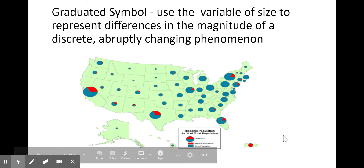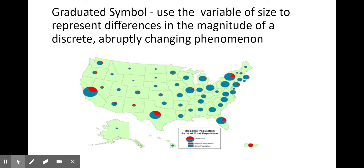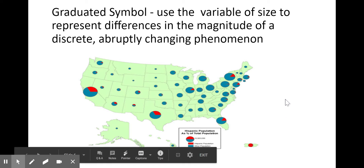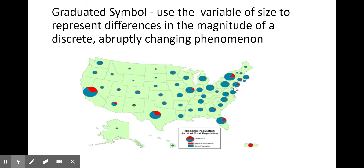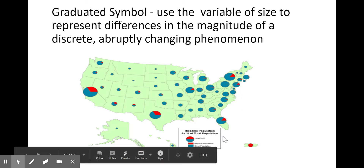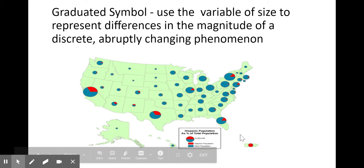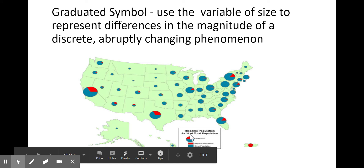This one is called a proportional symbol map, or sometimes a graduated symbol map — write down both of those terms. It uses a variable size of a symbol to represent the magnitude of a discrete, abruptly changing phenomenon. In simpler terms, it uses a symbol to represent an amount of something and changes the size of the symbol based on the area it's showing. You can see a circle representing 10 million people in terms of Hispanic populations, and the states at or above that amount — Texas, New York, and California.